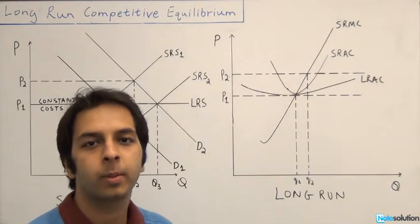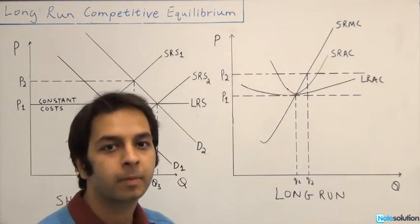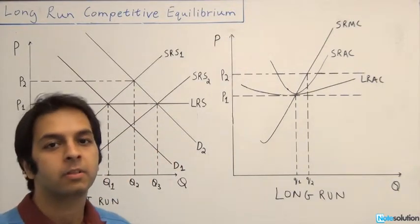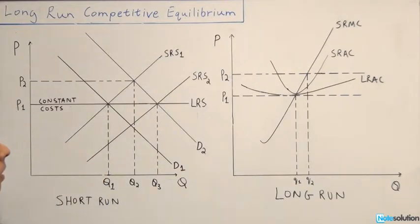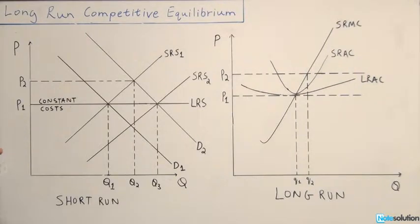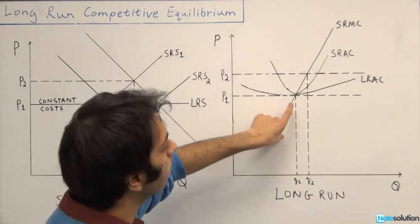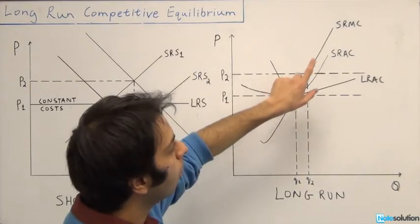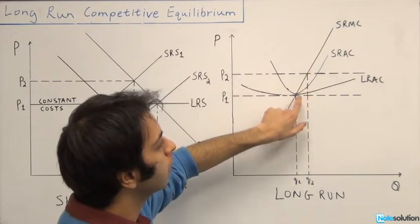Hi, this is Nathal from NoteSolution. We're going to be talking about long-run competitive equilibrium today, looking at a difficult question to clarify our concepts. The question is about the pub industry: assume that the pub industry in Toronto is a constant cost perfectly competitive industry, currently in long-run equilibrium. The output of this industry can be expressed in pints of beer sold. In long-run equilibrium, price equals marginal cost, which also equals the long-run average cost.